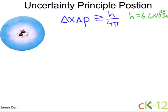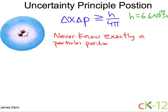That tells us that the uncertainty in position and momentum can be very, very small, but they can't be zero. What I'm saying is, you never know exactly a particle's position and momentum at the same time.